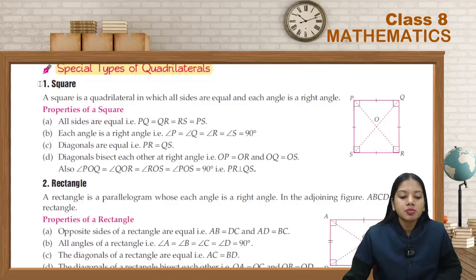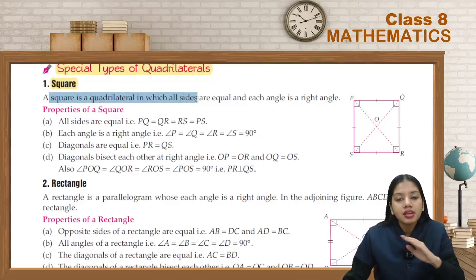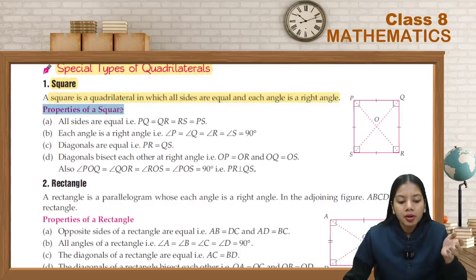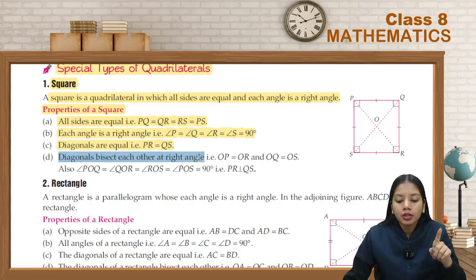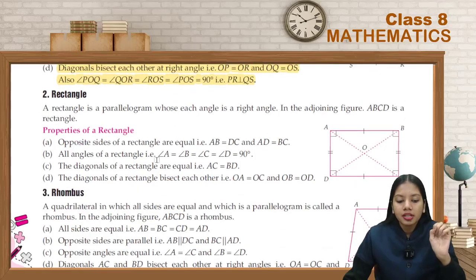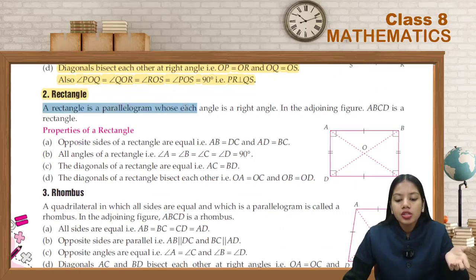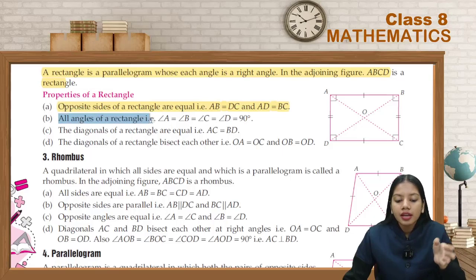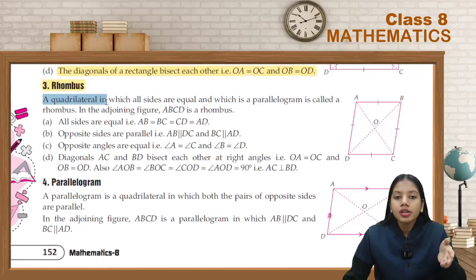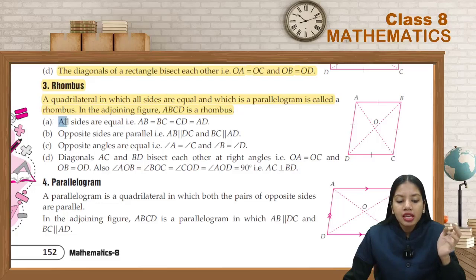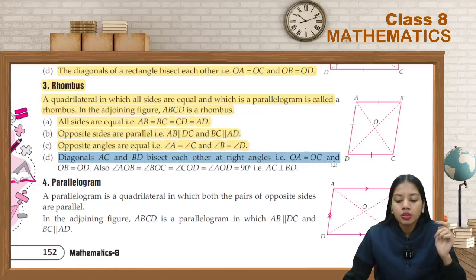Now, special types of quadrilaterals. First, the square: a quadrilateral where all sides are equal and every angle is 90 degrees. Its diagonals are equal and bisect each other at 90 degrees. Rectangle: a parallelogram where all angles are 90 degrees. In rectangle ABCD, opposite sides are equal, all angles are 90 degrees, and diagonals are equal and bisect each other. Rhombus: a quadrilateral where all sides are equal — a parallelogram. In rhombus ABCD, all sides are equal, opposite sides are parallel, opposite angles are equal, and diagonals bisect each other at 90 degrees.